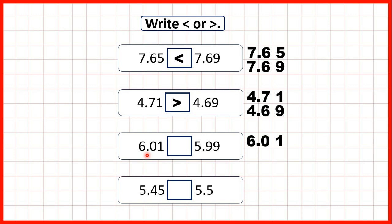Now we have 6.01 and 5.99. Remember we start by comparing the larger place values, so here that's comparing the ones. In the first number we have 6 ones and in the second we only have 5, so we know straight away that 6.01 must be larger. It doesn't matter that with 5.99 we have more tenths and more hundredths, because tenths and hundredths are smaller than ones.